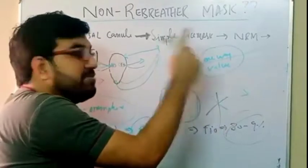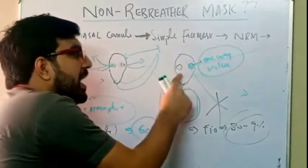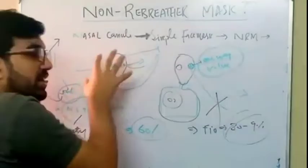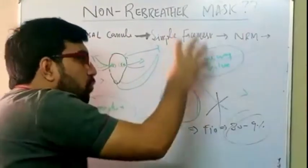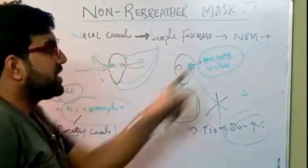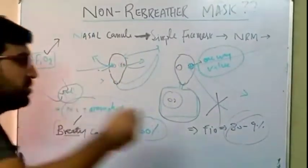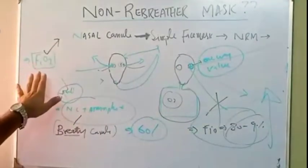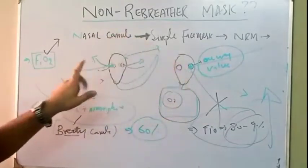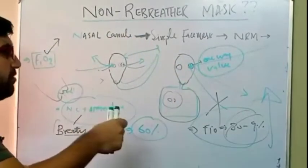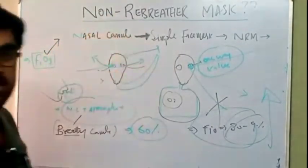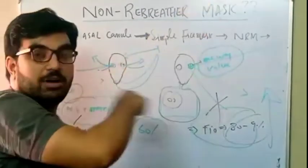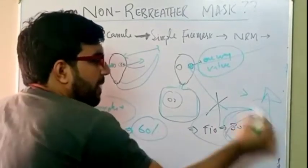The purpose of this lecture is to understand the non-rebreather mask: there is no interference from the surrounding, so we are inspiring solely from the oxygen source. With nasal cannula and simple face mask we cannot inhale only oxygen — we are inhaling atmospheric air as well, so FiO2 falls. With the non-rebreather mask we inspire only from the oxygen source, giving us 80 to 90 percent FiO2. Importantly, in most ward masks I have seen, the clips are missing — if clips are missing there is air interference, and FiO2 drops to 40 to 60 percent.